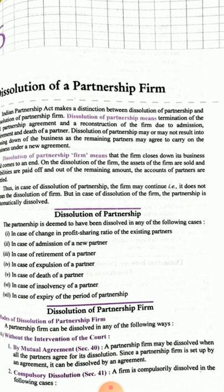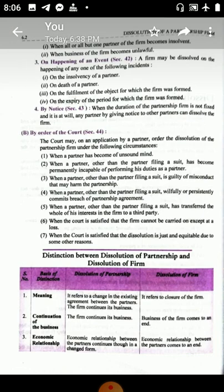Compulsory dissolution: a firm is compulsorily dissolved in the following cases. When all or one partner of the firm becomes insolvent — if all partners or even one partner is insolvent, then the partnership firm is dissolved. Also, if the business of the firm becomes unlawful or illegal, then the partnership must be stopped.